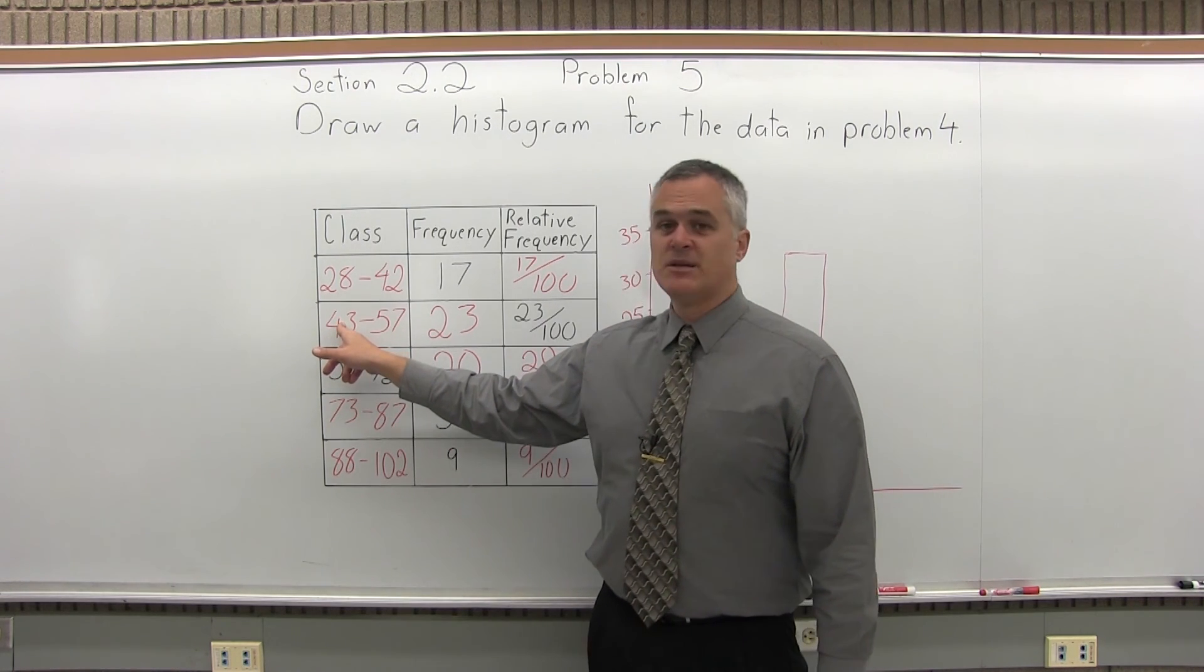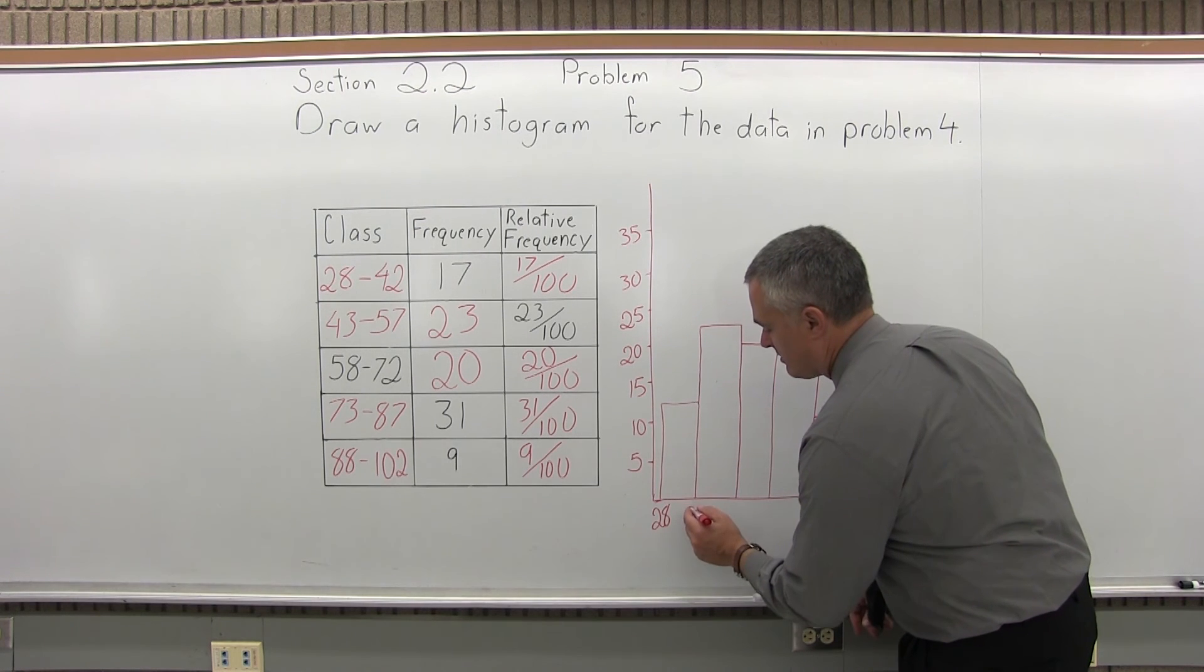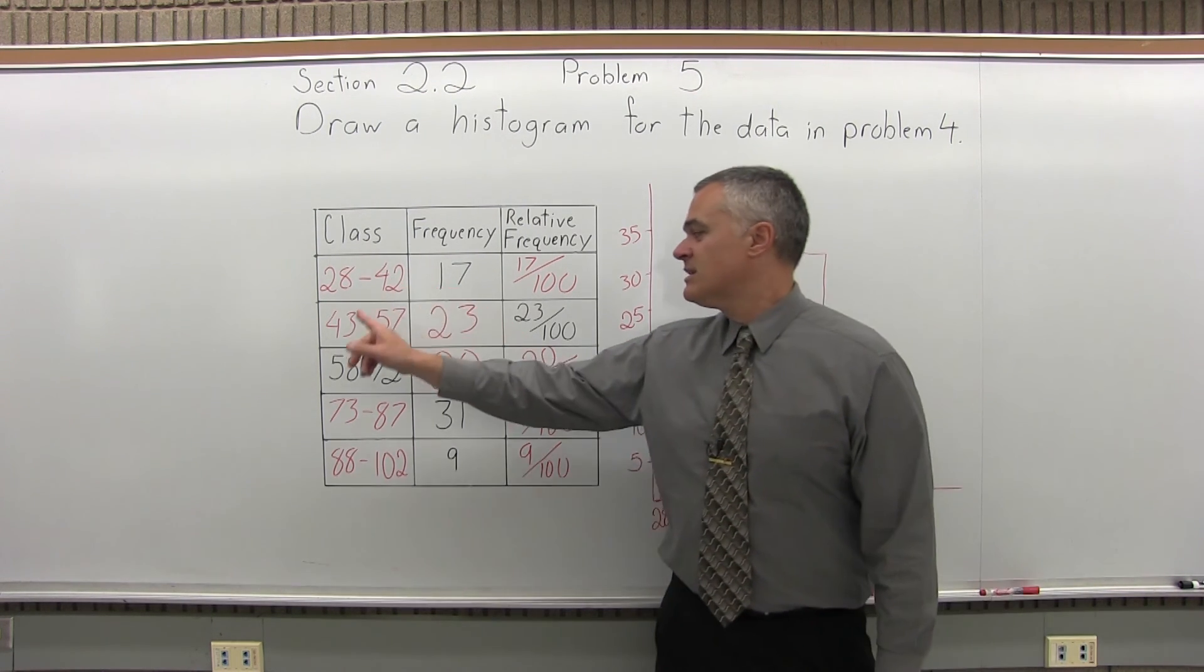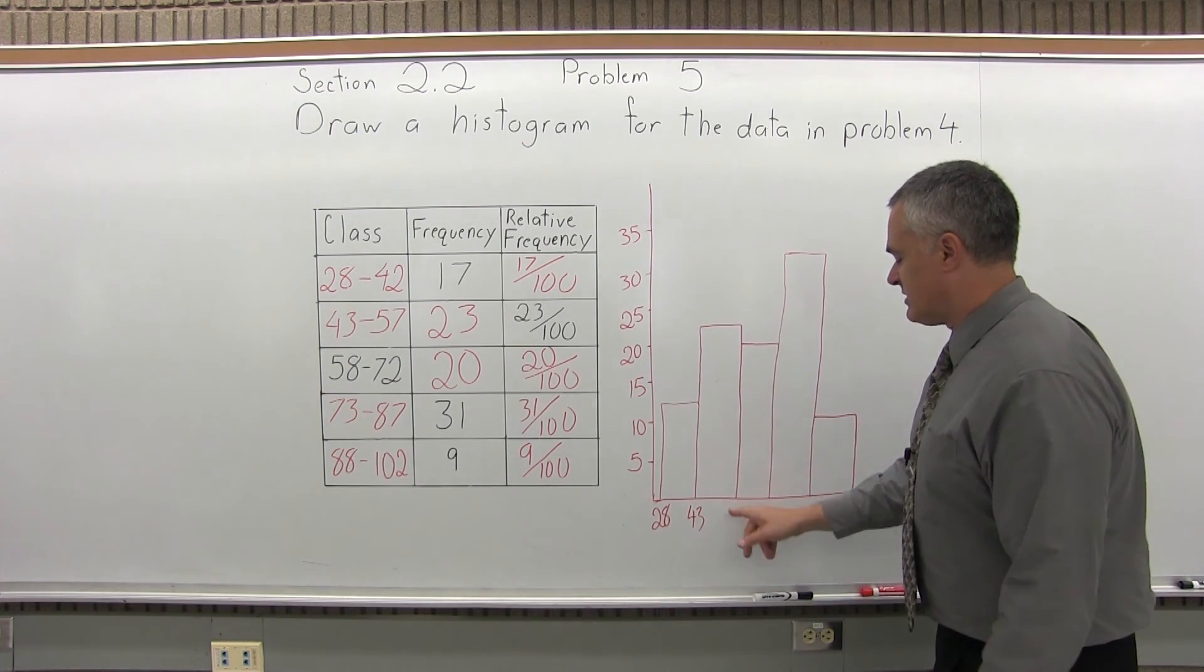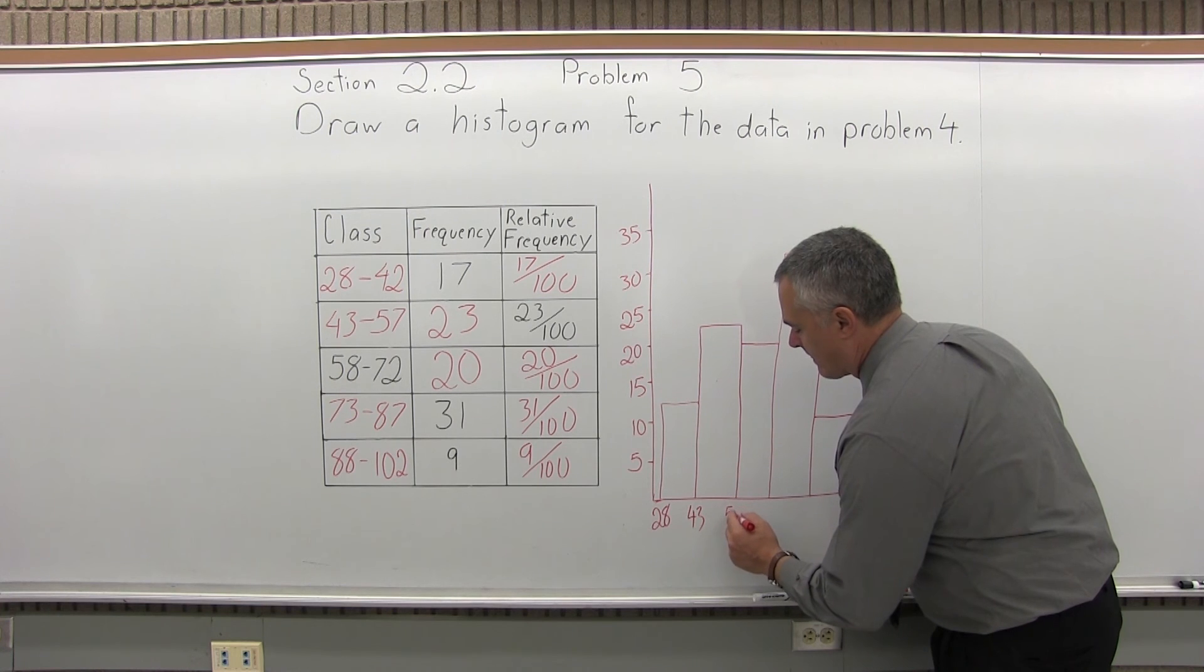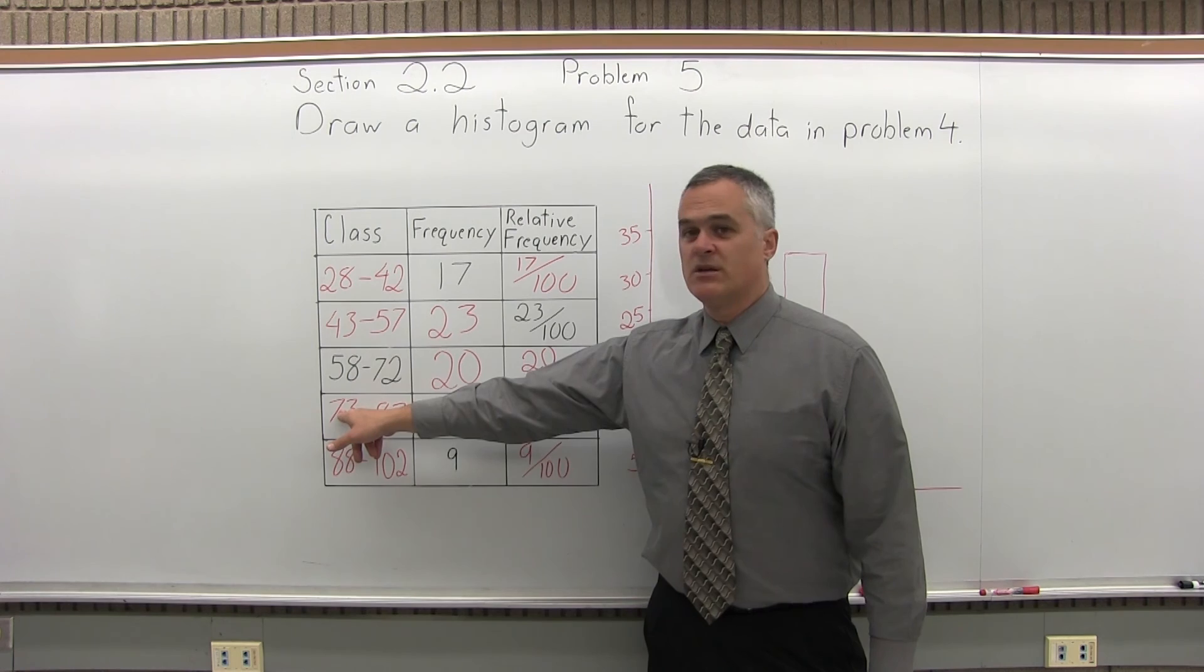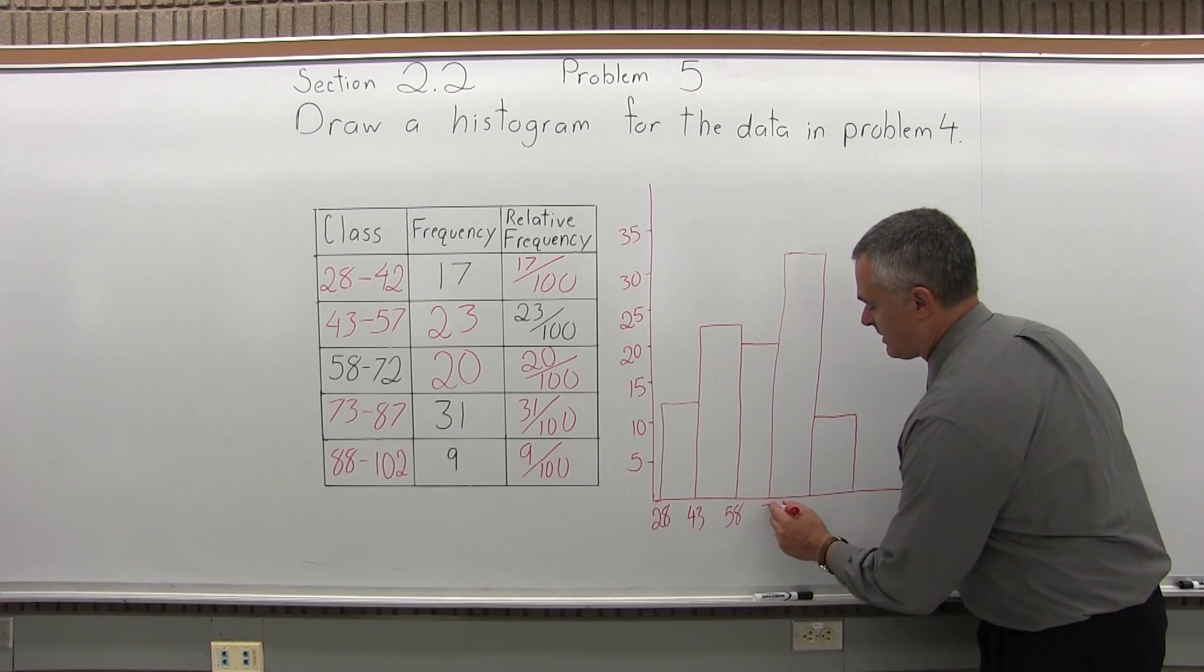Now, the next lower class limit is 43. It goes under the edge of the next bar. 43. The next lower class limit is 58. So, that 58 goes under the edge of the next bar. The next lower class limit is 73. So, that 73 goes under the edge of the next bar.